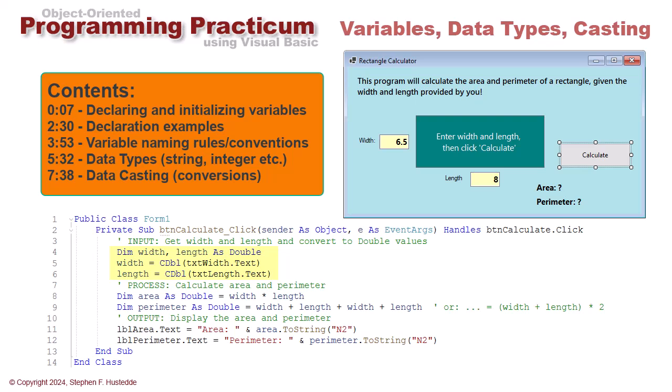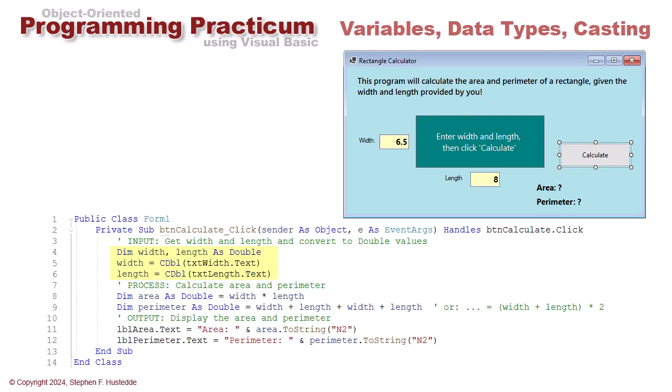Let's return back to an earlier project in which we created the rectangle calculator. That was an exercise in really just creating a Visual Basic application, and I said the code would make sense down the road. Well, here we are down the road. I want to look at the code for the input part of our algorithm.